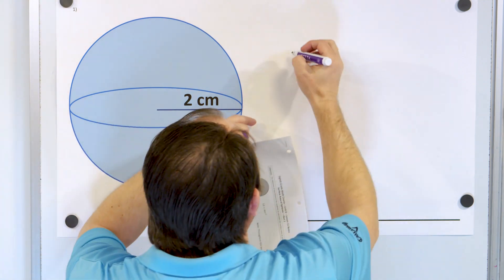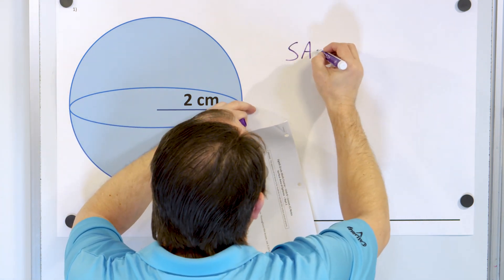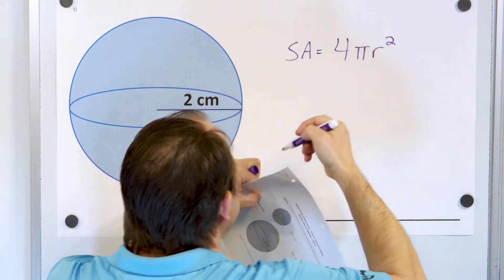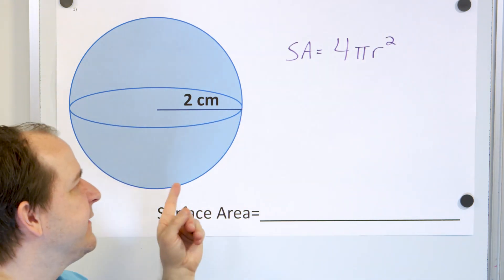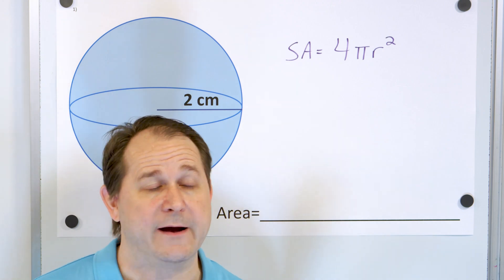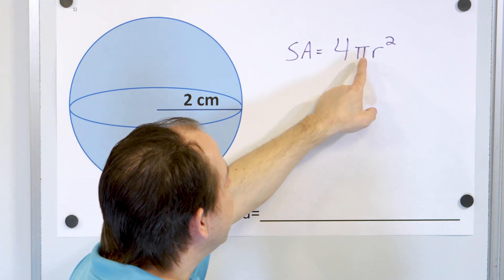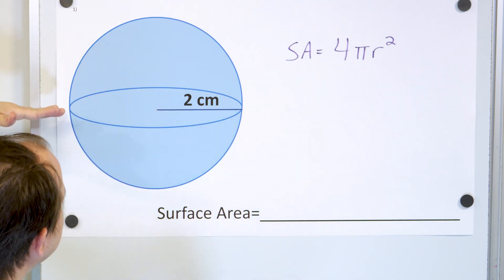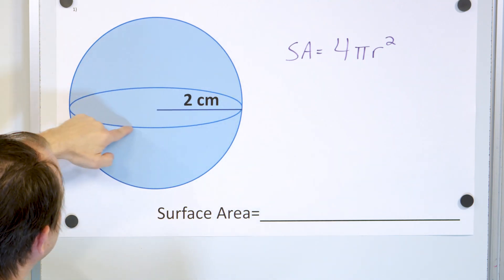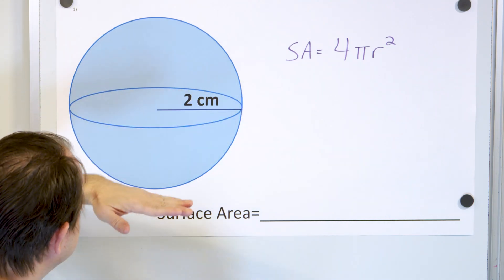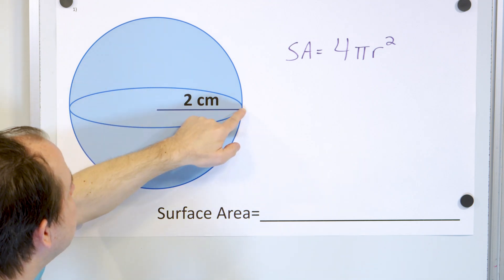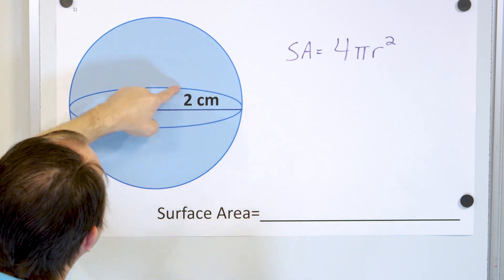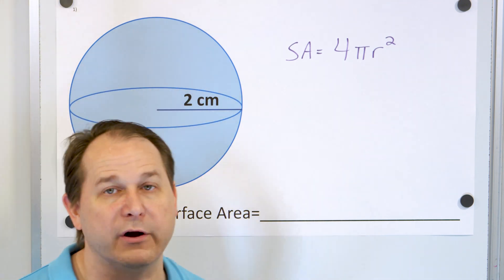The surface area of any sphere is four times pi times r squared. Now, pi r squared has a meaning — this is the radius of the cross-sectional diameter. This is a circle that if you slice through, it has a radius of two. So pi r squared is the surface area of the slice that goes through the center of the sphere.